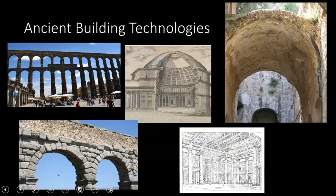Some of the building technologies the Romans used: they had these arches and used stacked arcades — rows of arches — to make their aqueducts. Also in their aqueducts, we saw them starting to use concrete. They used concrete in some of their large domes and large vaults.